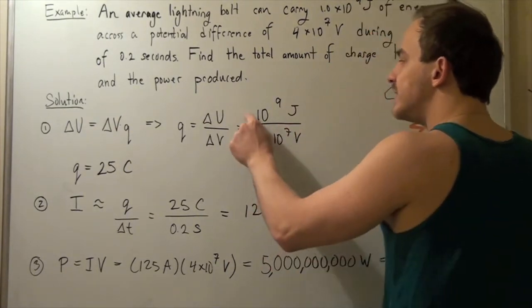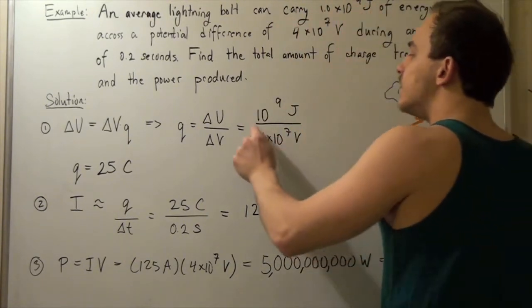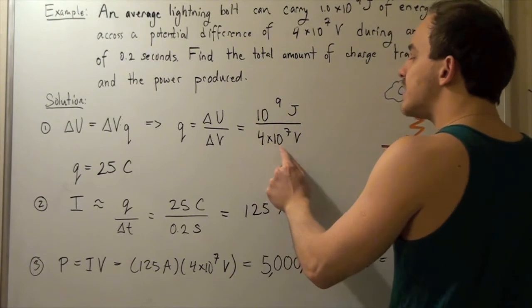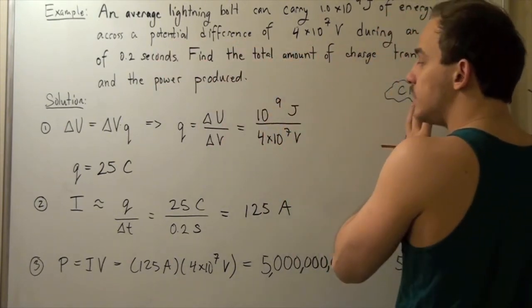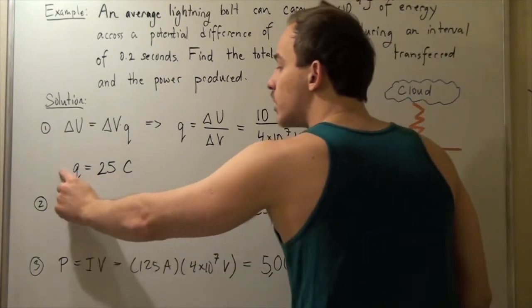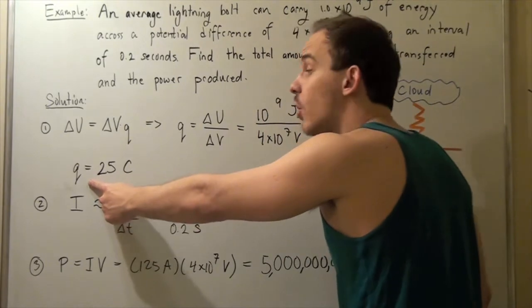And I get 10 to the 9 joules of energy that our lightning bolt carries divided by 4 times 10 to the 7 volts. This is the potential difference of our lightning bolt. And we get our charge to be 25 coulombs. That's a very large charge.